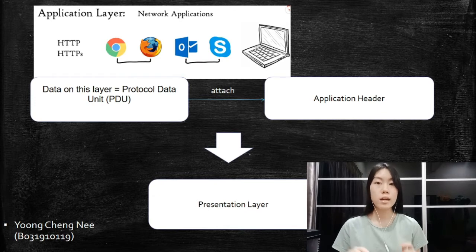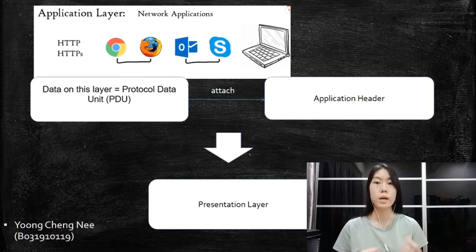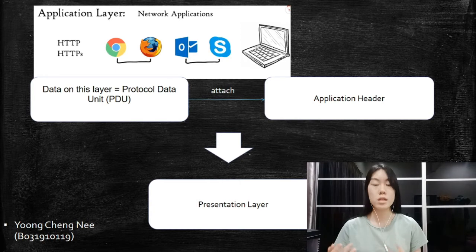Data on the layer is referred to as a protocol data unit. Each subsequent layer encapsulates the previous data layer's PDU with the layer's respective headers and is then sent to the next layer. In the application layer, data will attach an application header and then passes to the presentation layer.